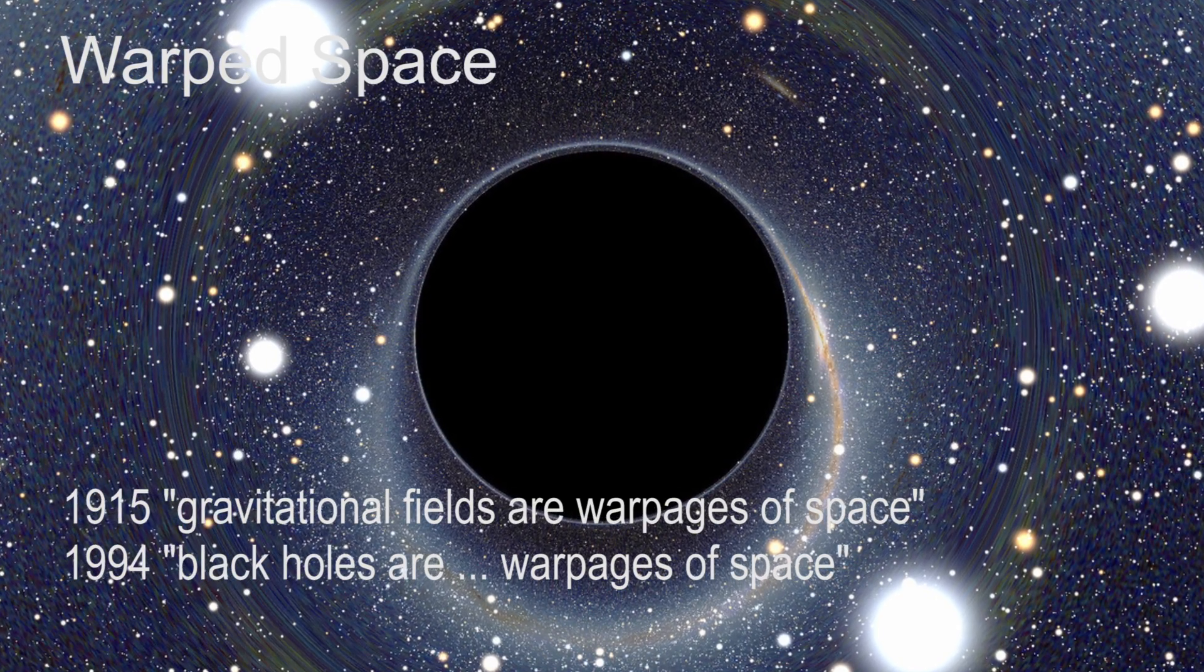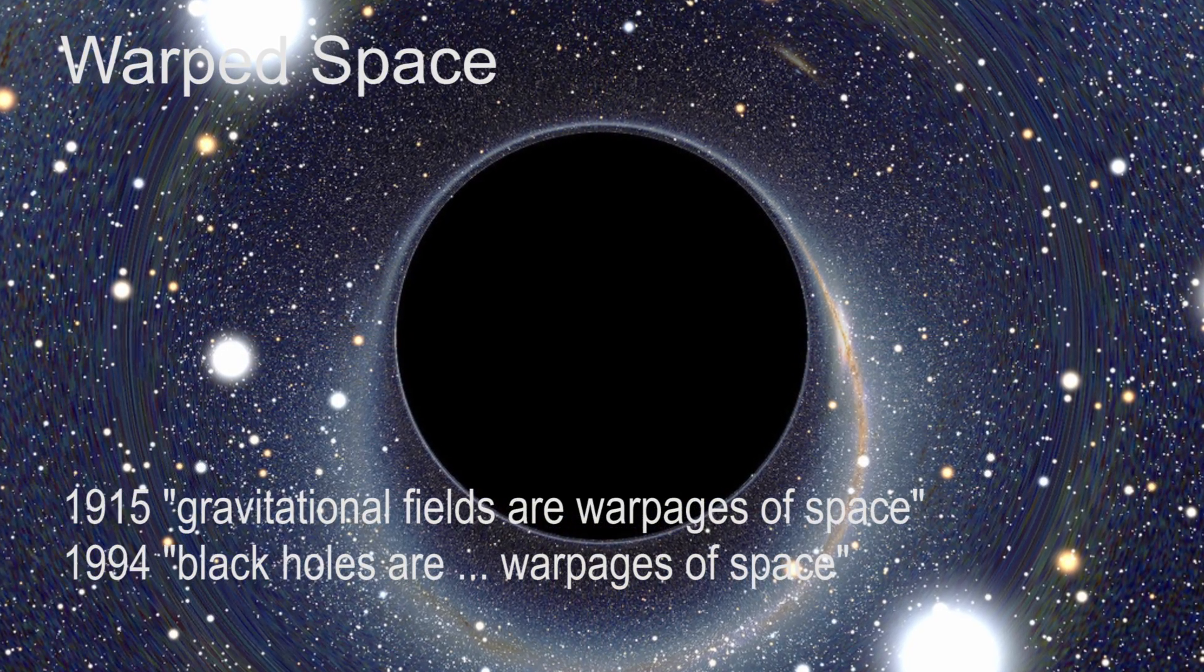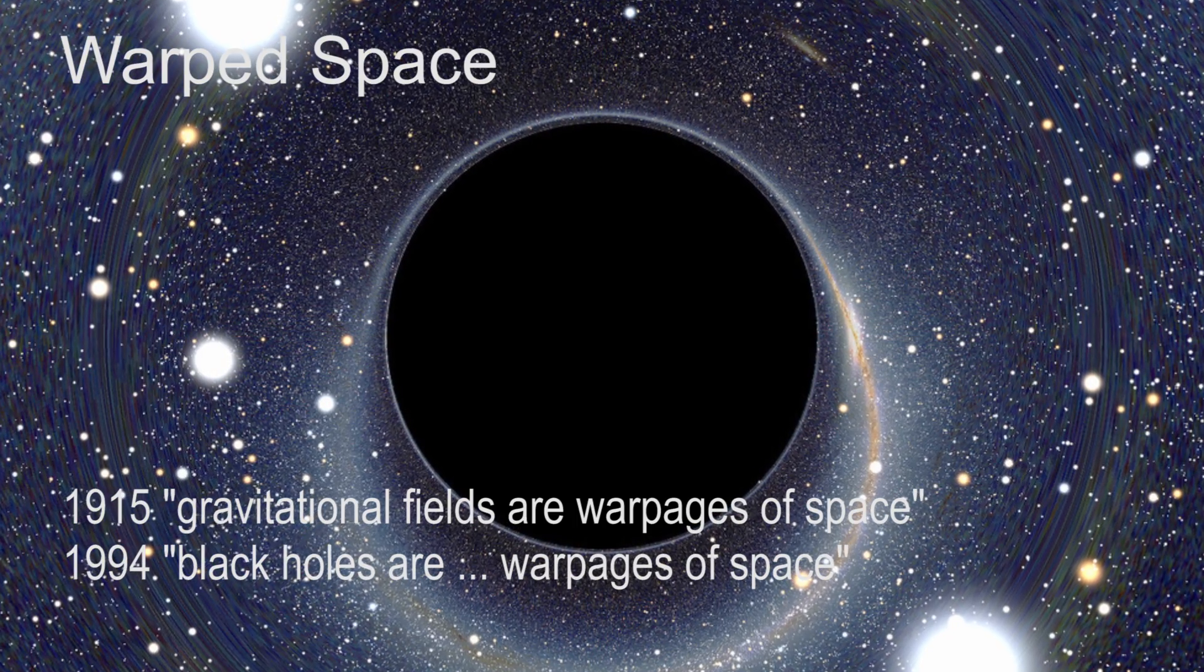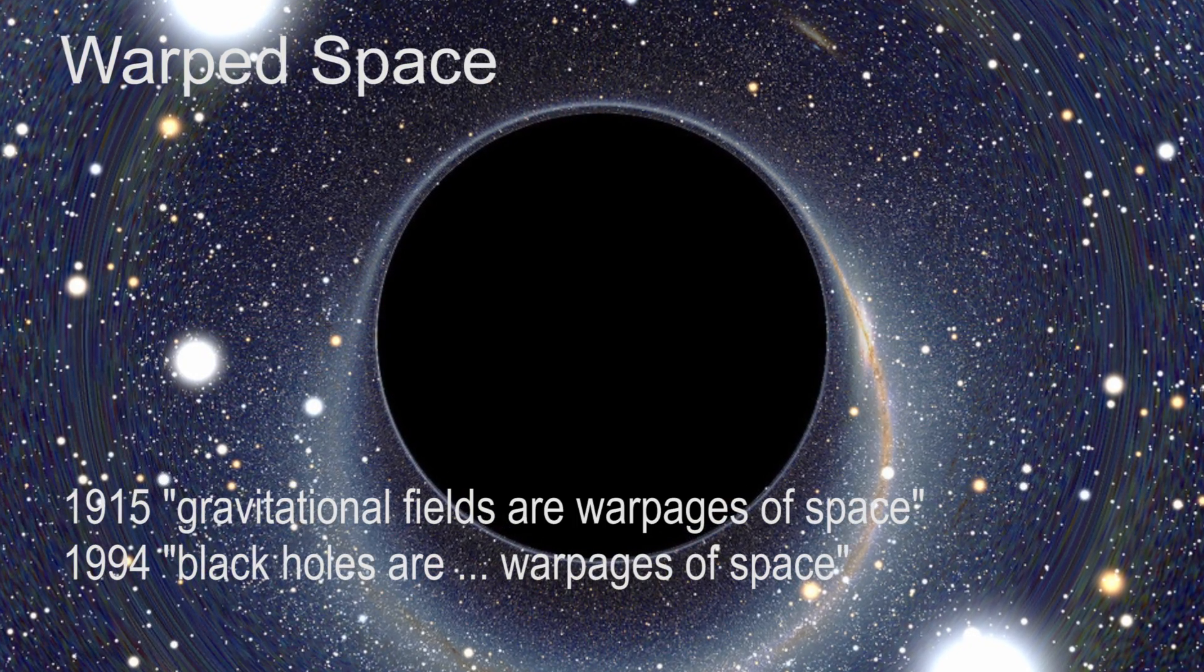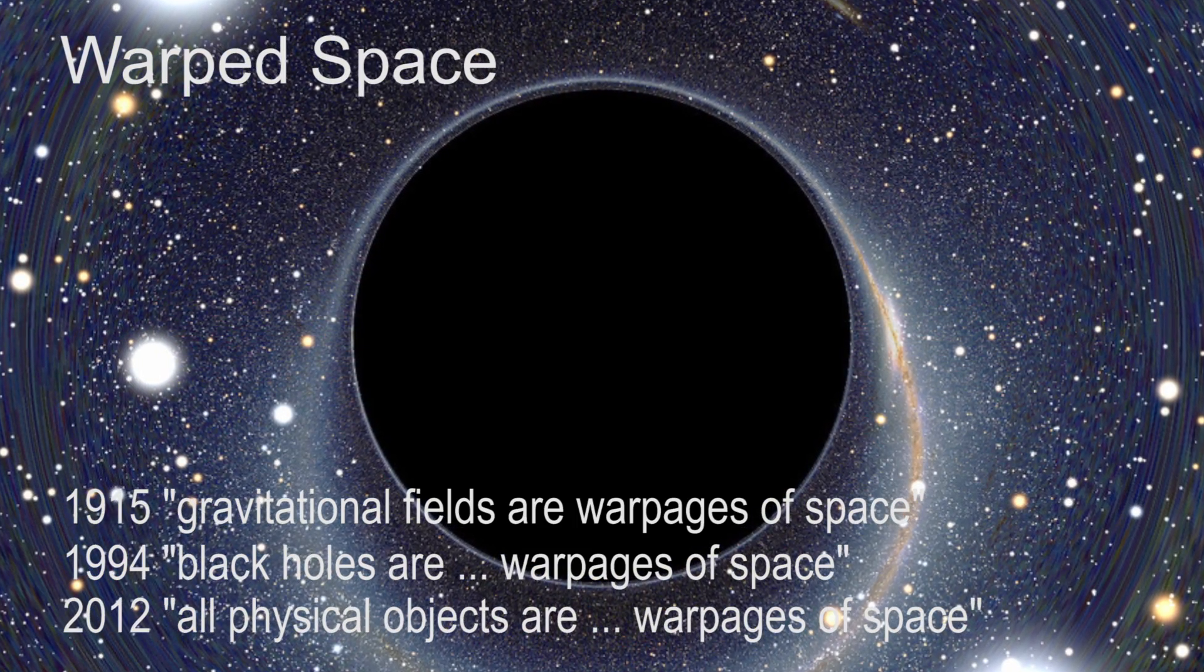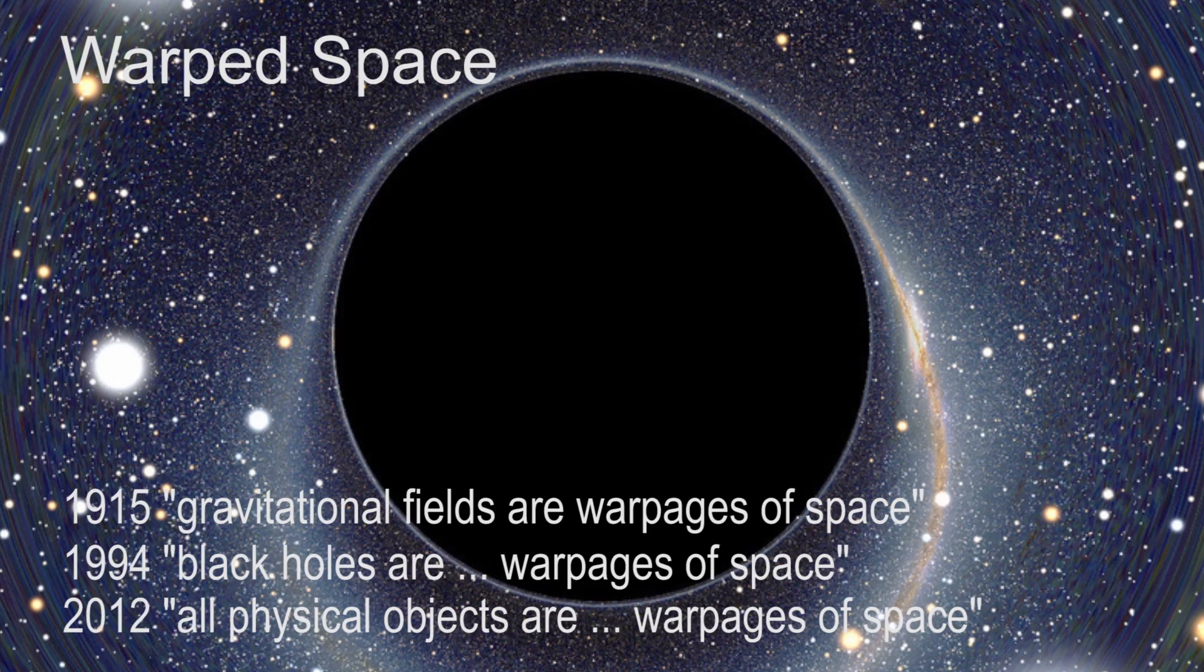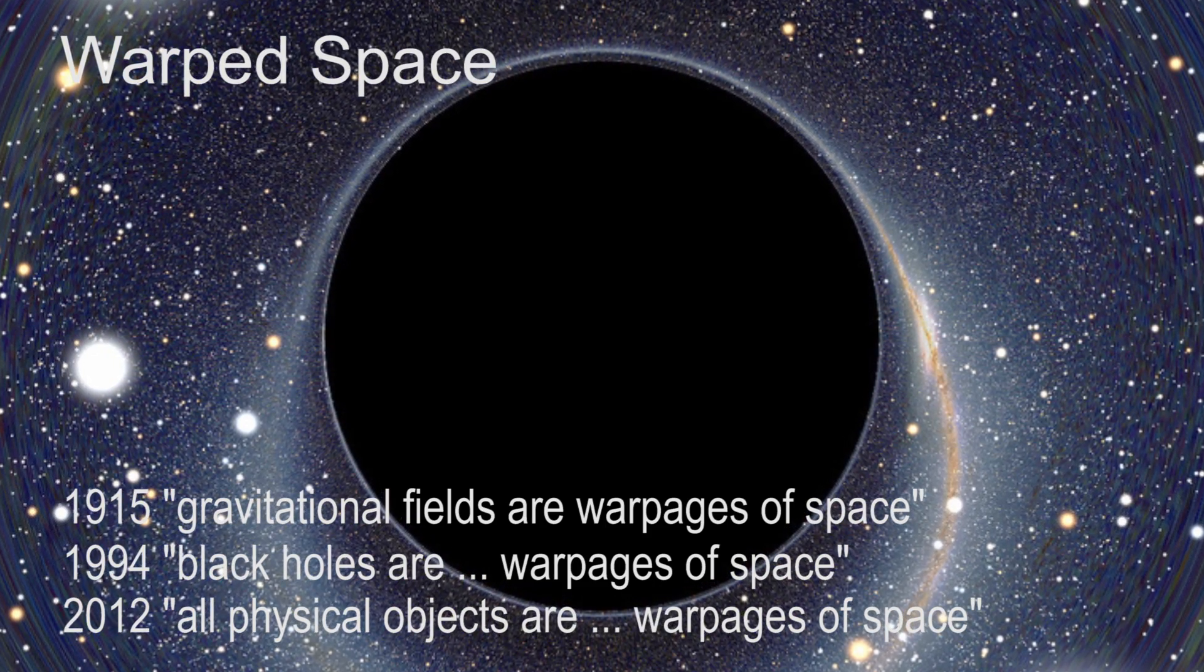In his 1994 book, Black Holes and Time Warps, Einstein's Outrageous Legacy, physicist Kip Thorne tells us that black holes are made wholly and solely from the warpage of space itself. The cavitation theory of matter takes these ideas further and proposes that all physical objects are made wholly and solely from the warpage of space itself.